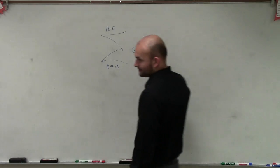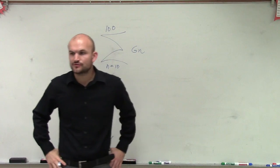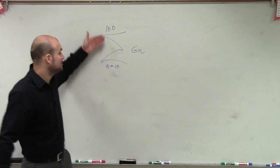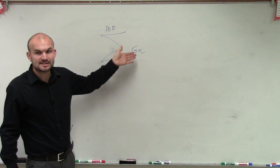So ladies and gentlemen, we have here is going to be our partial sum, all right? And what they want us to do for this series is calculate the partial sum for 100 terms starting at 10 with the rule of 6n.